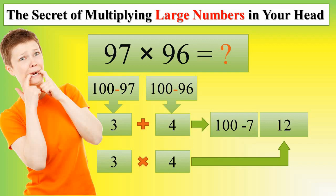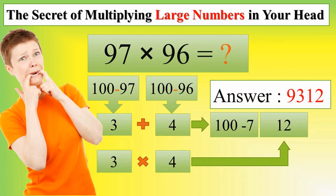The next step is putting those two steps together: 93 and 12. So this is the answer: 9,312.